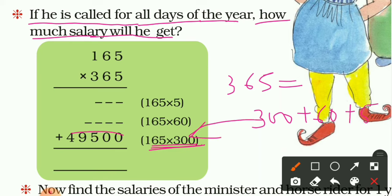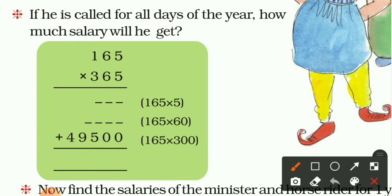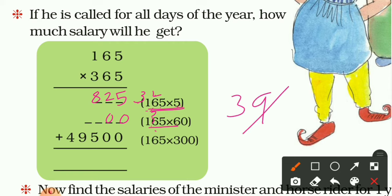Now we find 165 × 5 and 165 × 60. For 165 × 5: 5 × 5 = 25, write 5 carry 2; 5 × 6 = 30 plus 2 = 32, write 2 carry 3; 5 × 1 = 5 plus 3 = 8. So 165 × 5 = 825. For 165 × 60: put a 0, then 6 × 5 = 30, write 0 carry 3; 6 × 6 = 36 plus 3 = 39, write 9 carry 3; 6 × 1 = 6 plus 3 = 9. So 165 × 60 = 9900.